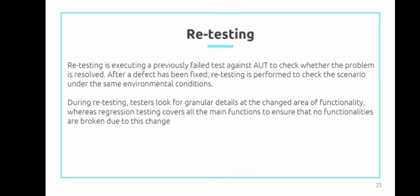Next is retesting. Retesting is executing a previously failed test against the AUT to check whether the problem is resolved after the defect has been fixed. Retesting is performed to check the scenario under the same environmental condition. Ibig sabihin, pagkatapos ng defect reporting at defect mapping, mag-re-retesting sila sa ganong senaryo pa rin, para malaman nila kung uulit ba ang naging defect o bugs na ito, at kung pwede pa uli mangyari sa isang system na kanilang ginawa.